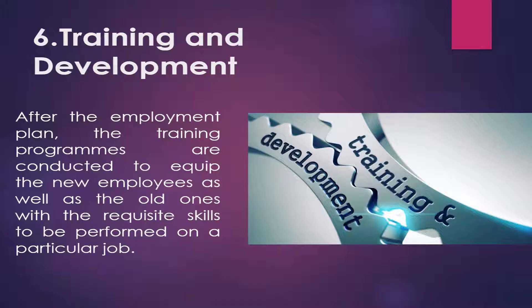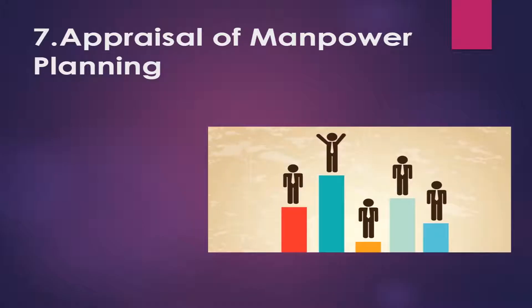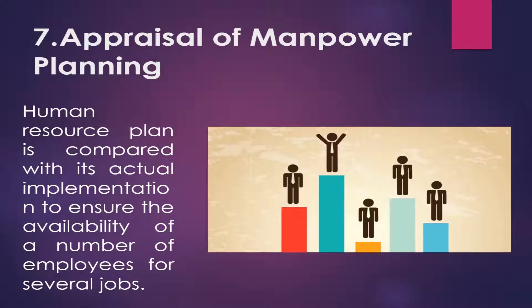The last step is appraisal of manpower planning. Finally, the effectiveness of the manpower planning process is to be evaluated. Here, the human resource plan is compared with its actual implementation to ensure the availability of the right number of employees for several jobs. At this stage, the firm has to decide the success of the plan and control the deficiencies, if any.